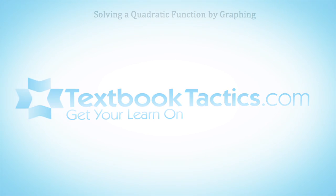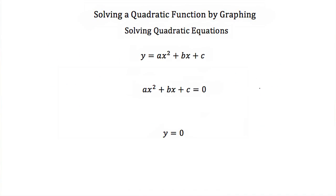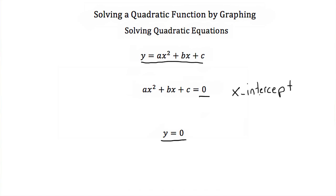This is a tutorial on solving a quadratic function by graphing. When we solve a quadratic equation, we're actually taking a quadratic equation and setting it equal to 0. Since y is equal to this quadratic equation and we're setting that equal to 0, we're saying that y is equal to 0. If we graph this quadratic equation, we would be looking for places where y is equal to 0 — those are places where the graph crosses the x-axis. So we're looking for x-intercepts of this quadratic equation. These x-intercepts are sometimes called solutions, but they're also sometimes called zeros or roots.